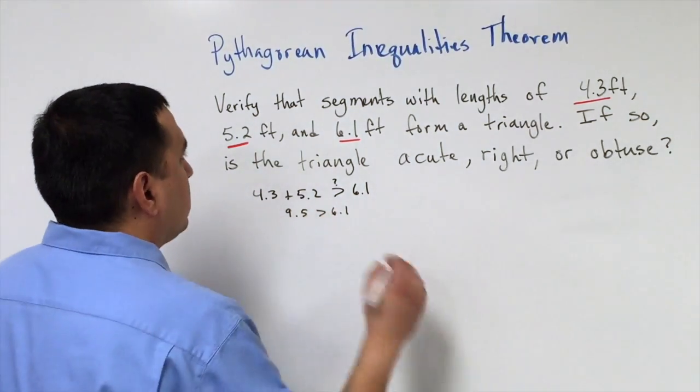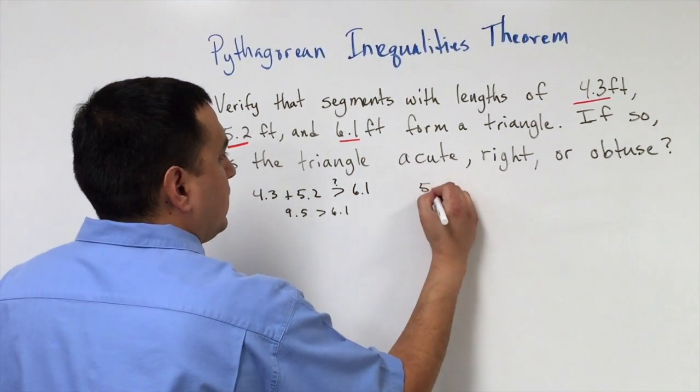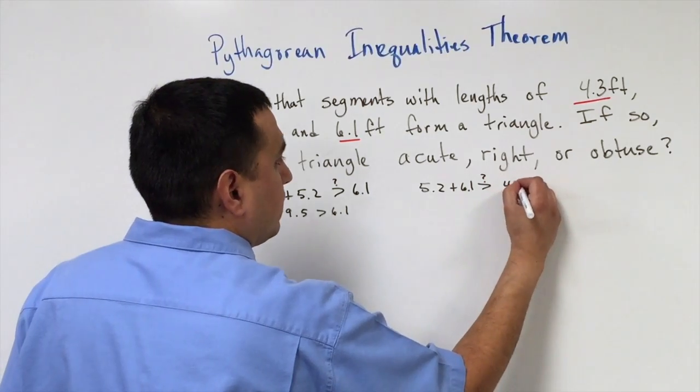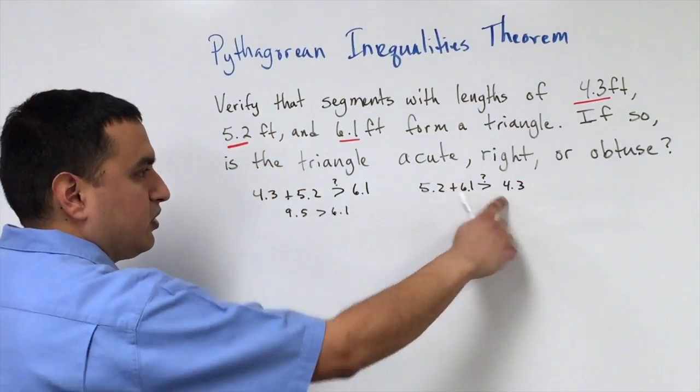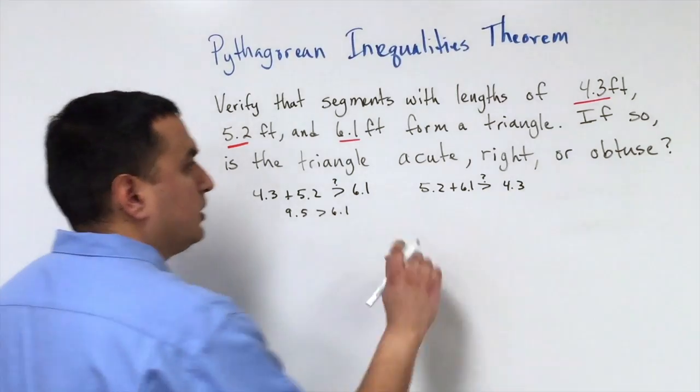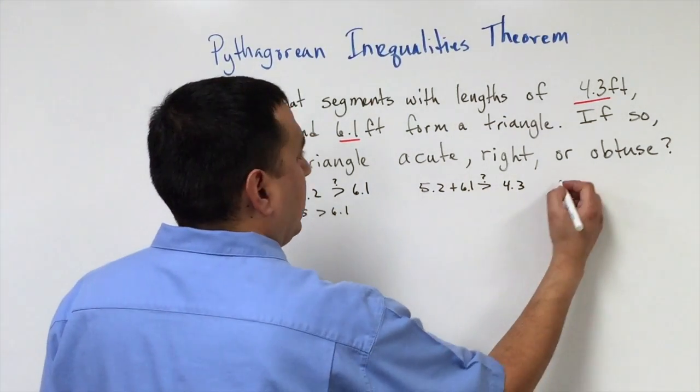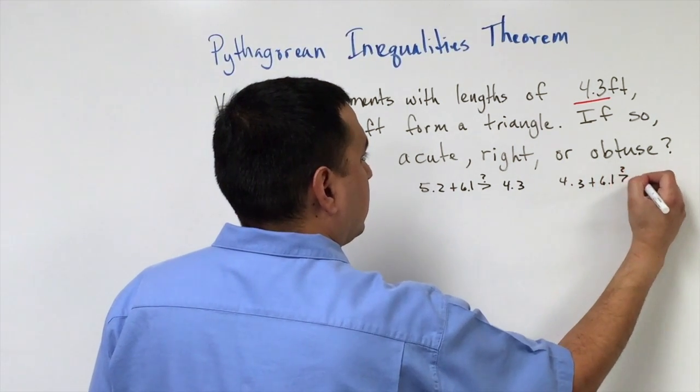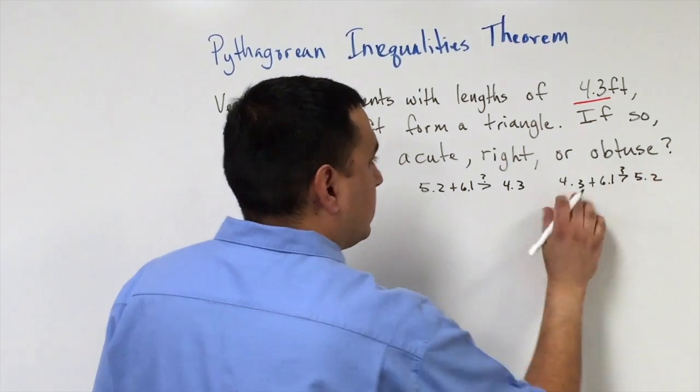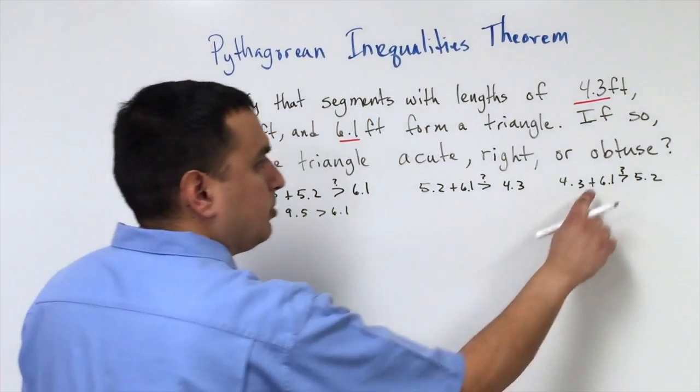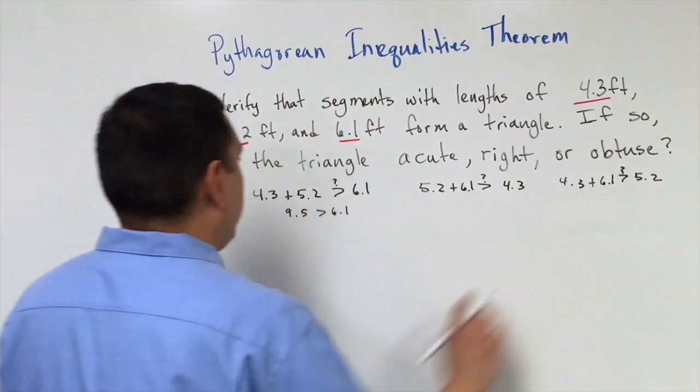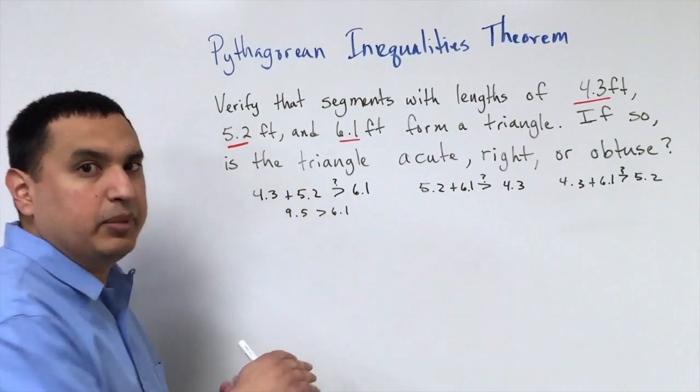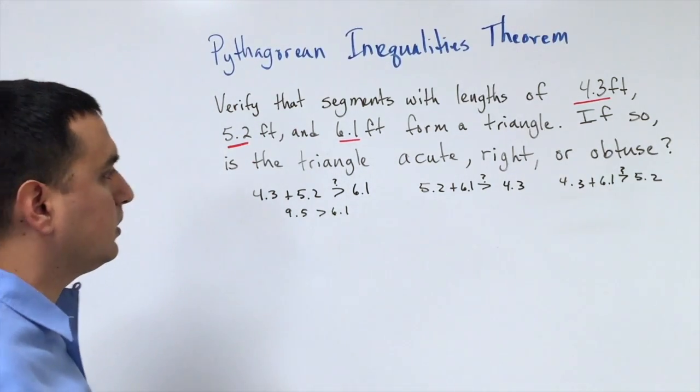You could check other combinations. You'd have to check 4.2 plus 6.1 and see if that is greater than 4.3. Obviously it's going to be because both of these are greater than 4.3 by itself. Then you would have 4.3 plus 6.1, is that greater than 5.2? Which again, that's going to be greater because this one by itself is greater than 5.2. So all three combinations work. This would in fact make a triangle, which means we can use the Pythagorean inequality theorem.